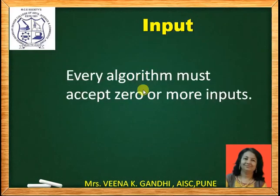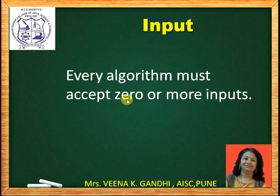First property: input. Every algorithm must accept zero or more inputs. For solving any problem, we require input data. For example, for making tea, we require water, tea leaves, sugar, and milk. So every algorithm must accept zero or more inputs.